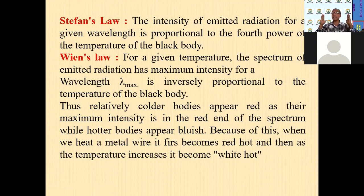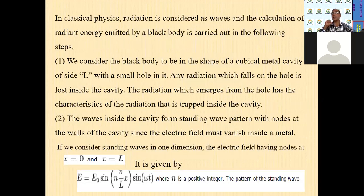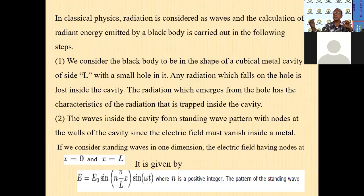Relatively colder bodies appear red because their maximum intensity lies in the red end of the spectrum, while hotter bodies appear bluish. This is why when we heat a metal wire, it first becomes red hot and then, as temperature increases, it becomes white hot. In classical physics, radiation is considered as a wave. The calculation of radiant energy emitted by the black body is carried out in two steps. The black body is considered to be a cubical metal cavity, and any radiation which falls on the hole is lost inside the cavity. The radiation that emerges from the hole has the characteristics of the radiation trapped inside the cavity.